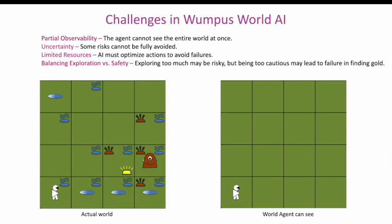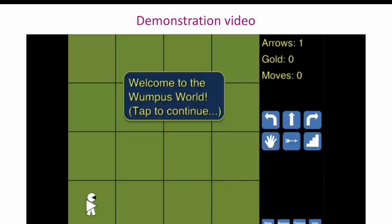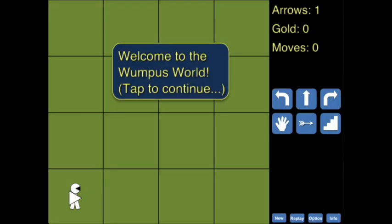Challenges in Wumpus World AI: partial observability means the agent cannot see the entire world at once; uncertainty means some risks cannot be fully avoided; limited resources require the AI to optimize actions to avoid failures; and balancing exploration versus safety is critical — exploring too much may be risky, but being too cautious may lead to failure in finding gold.